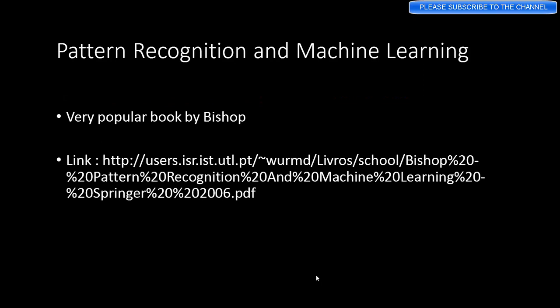The next one is Pattern Recognition and Machine Learning. It's a very popular book by a scientist called Bishop who works for Microsoft. He's a fellow there and it's a very popular book, in fact it's one of the most popular books in machine learning. It's also freely downloadable if you just simply do a Google search you will get the link. I'm also going to provide all the links in the description section.